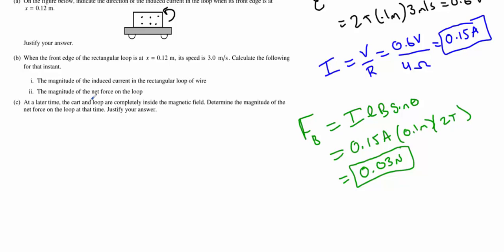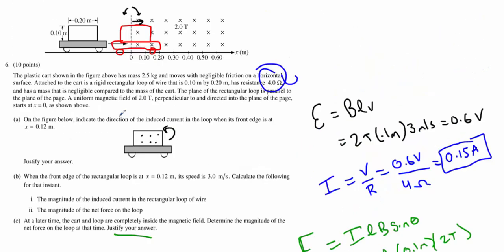Finally, at a later point in time, the cart and loop are completely inside the field. We want to now determine the net force in the loop at that time, and of course, we do need to justify. And so let's take a look at that. Now we are completely submerged in the field, cruising along at a nice constant speed. And we want to think about, well, what is the force and current induced in this?